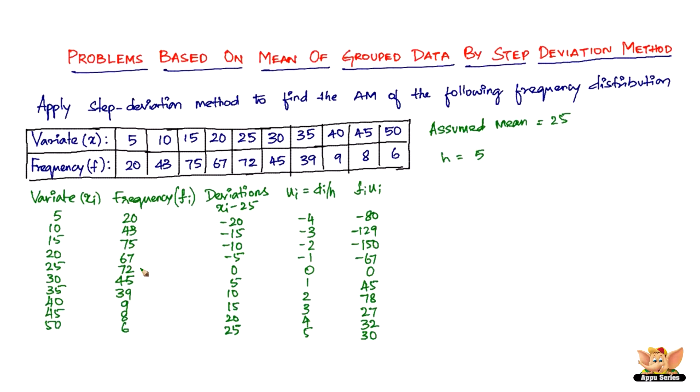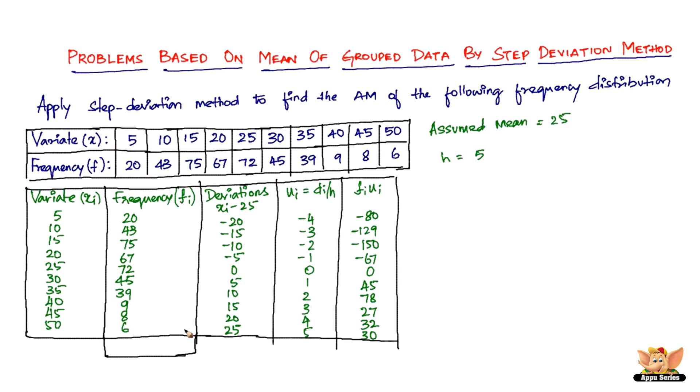So the table is constructed. What we need is the sum of the frequency for n - that's going to be 384. And then we need the sum of this one, which is going to be negative 214.